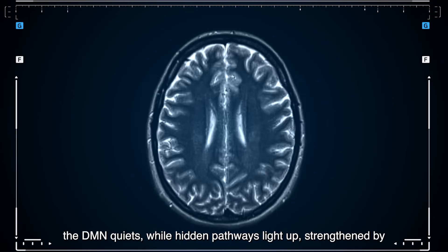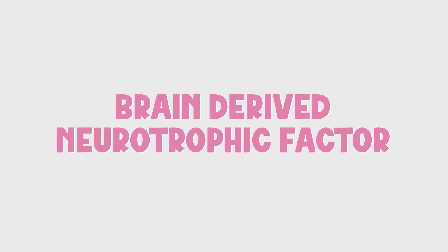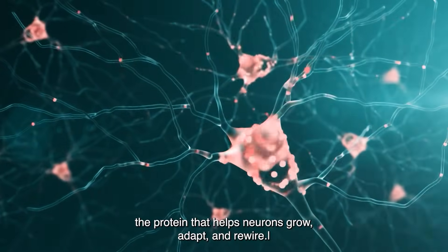Brain scans confirm this. The DMN quietens, while hidden pathways light up, strengthened by brain-derived neurotrophic factor, the protein that helps neurons grow, adapt, and rewire.